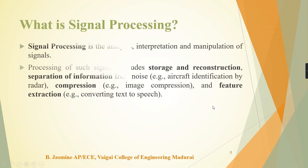What is signal processing? Signal processing is the analysis, interpretation, and manipulation of any signal. The processes applied to a signal include storage and reconstruction, separation of information from noise, and compression. For example, when you send a video or audio file through WhatsApp, the software first compresses the file size before transmitting it over the network. Compression itself is a form of signal processing. Feature extraction — such as converting text to speech or speech to text — is also signal processing. Examples include Google voice recognition and Google Lens.